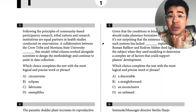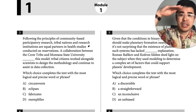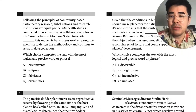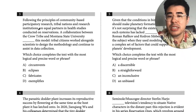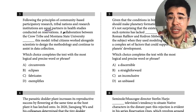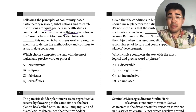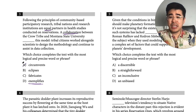Okay, so this is the first module, which I think is where they're trying to just kind of get your score. If you answer more questions correctly, you'll move up into a different module. Following the principles of community-based participatory research, tribal nations and research institutions are equal partners. A collaboration between the Crow Tribe and Montana State University... 'Exemplifies' — maybe — is trying to showcase this model, give an example of. 'Circumvents' means to prevent, 'eclipses' means to overshadow, 'fabricate' means to fake or make up. So 'exemplifies' works best.